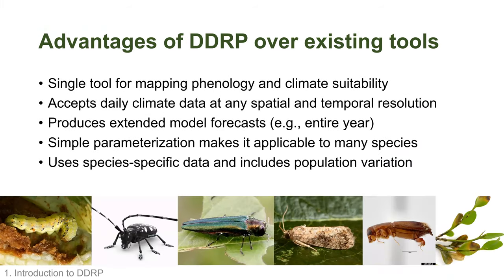One advantage of DDRP over existing modeling tools is that it integrates phenology and climate suitability mapping. It also accepts daily climate data at any spatial and temporal resolution — gridded raster climate data at fine or large scale, for any region of interest. It produces extended model forecasts using short-term climate forecasts and 10-year averages to forecast phenology and climate suitability over the entire year — for instance, forecasting through December 31st of the current year.